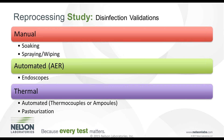Automated AERs are usually used for endoscopes — similar to a washer disinfector, specifically designed for endoscopes where you place the scope in and it runs through a disinfection cycle. Thermal disinfection utilizes a washer disinfector, and this is where the big difference lies between the U.S. and European markets. For thermal disinfection in the U.S., you're looking for a log reduction requirement, whereas in the EU market they use what's called an A-0 value.